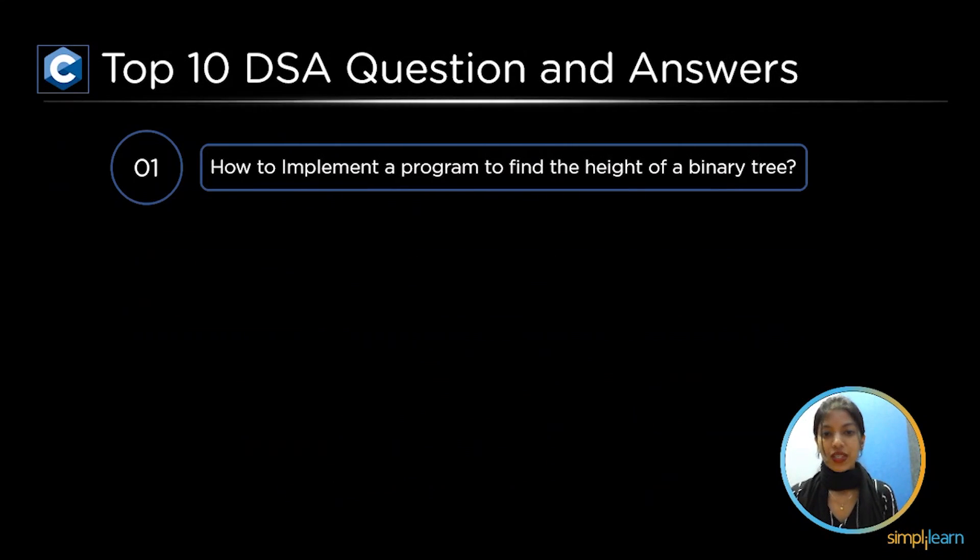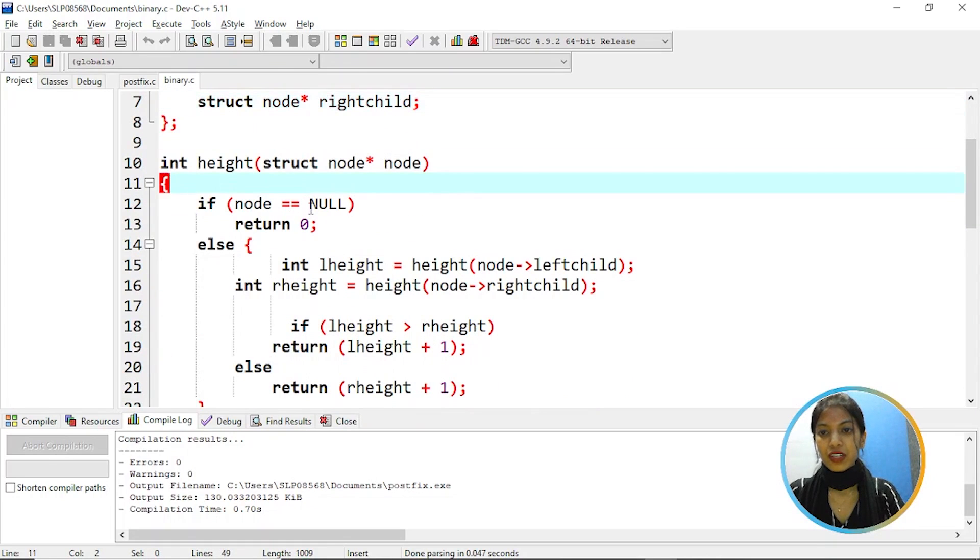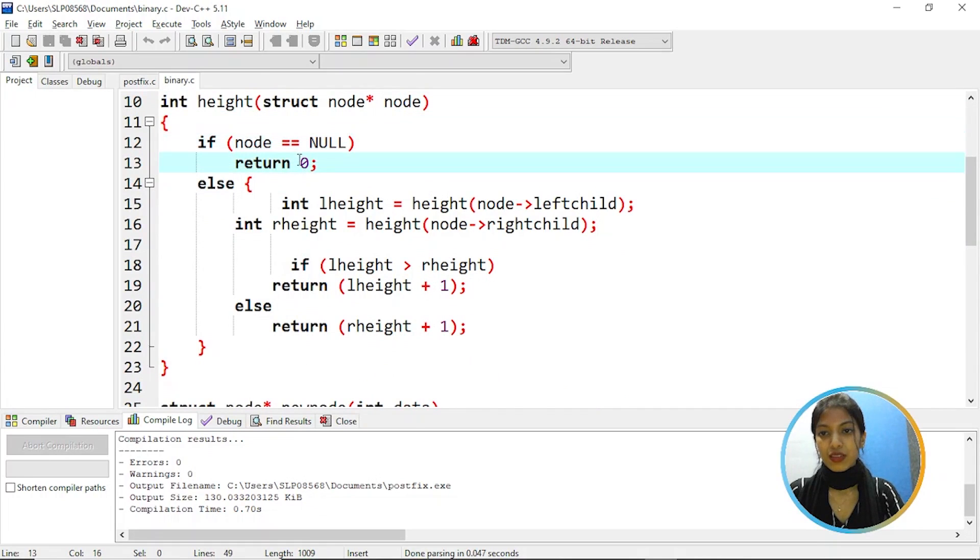So our first question is how to implement a program to find the height of a binary tree. So as you can see this is a program to find the height of a binary tree which means finding the levels of a binary tree. So first we have a data variable and we have a pointer to left child and right child and then coming to height function if node is equal to null then return zero.